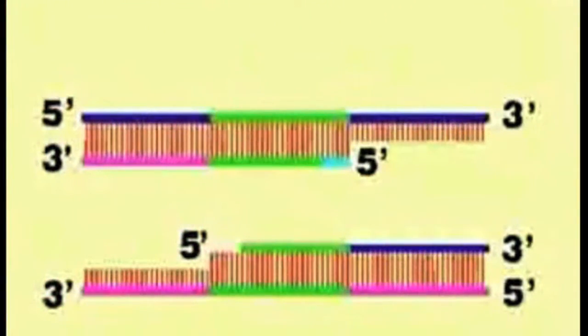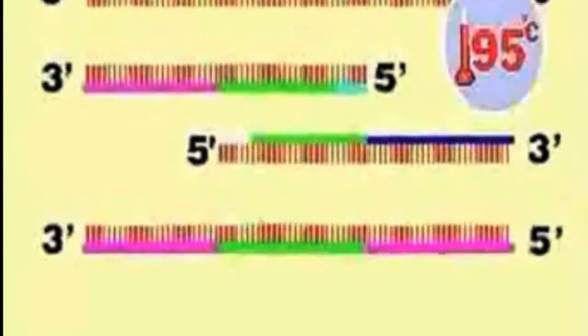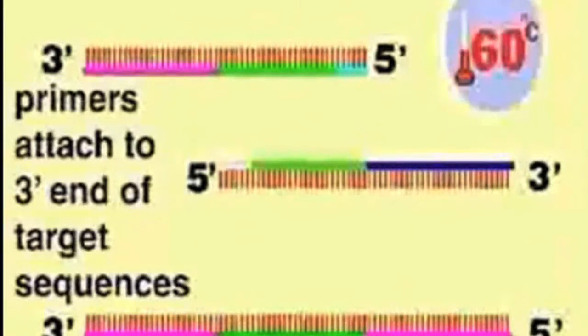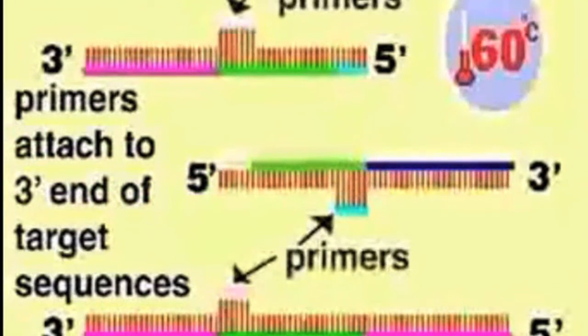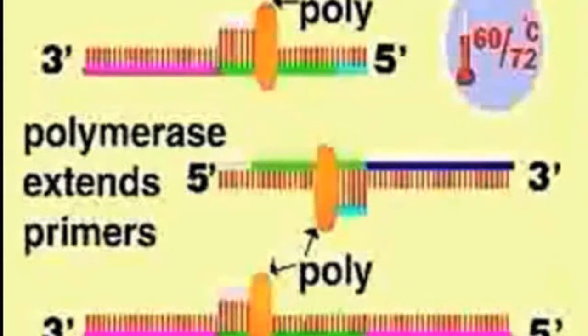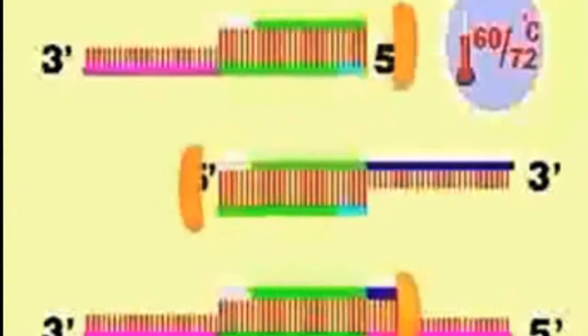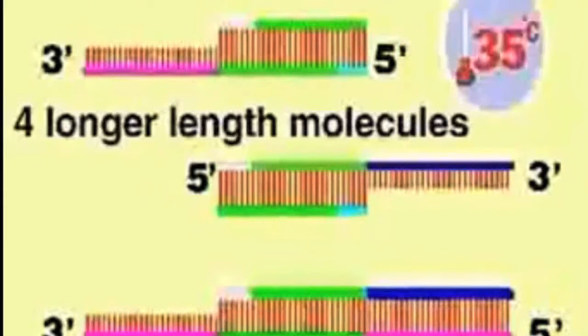Now that we're done with cycle one, we can begin cycle two, and it's the exact same thing. We heat it up to 95 degrees Celsius, which is enough to separate our old, original template strands and our newly made copies. We cool it to 60 degrees Celsius. That is cool enough for the primers that still are floating around in the test tube to bind to the beginning and end portions of our gene of interest. Then we get to the right temperature for the enzyme, the DNA polymerase. It finds the primer and starts copying. And that's the end of cycle two.